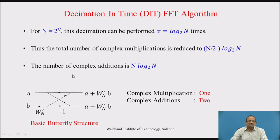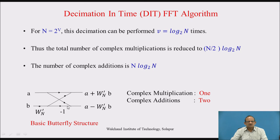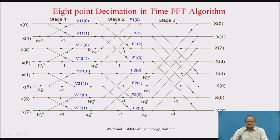This structure is known as a butterfly structure, where you have two inputs a and b, and a multiplication factor W′_N. Input a passes straight through, while b gets multiplied by W′_N. The output is a + W′_N·b at one node and a − W′_N·b at the other, since it is multiplied by minus 1. This structure requires one complex multiplication and two complex additions.